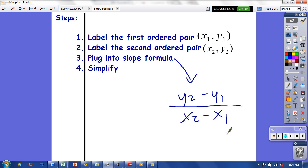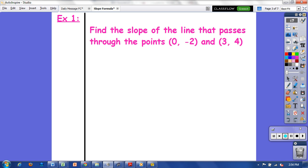Here, find the slope of a line that passes through the point (0, -2) and (3, 4). I will use my slope formula and write it over here.